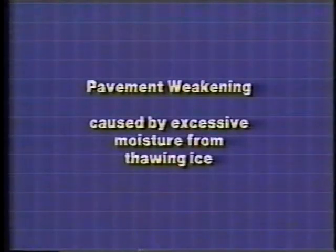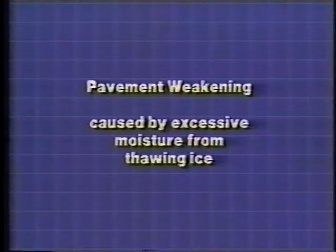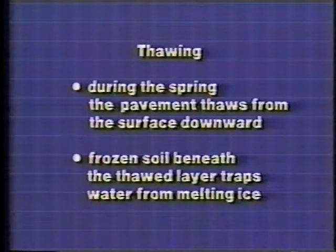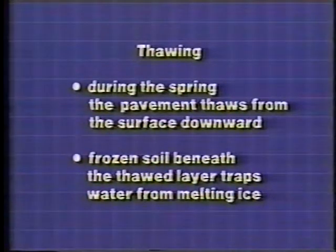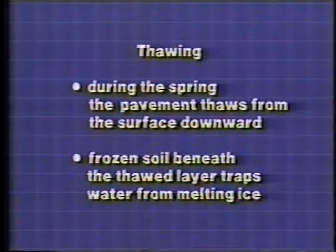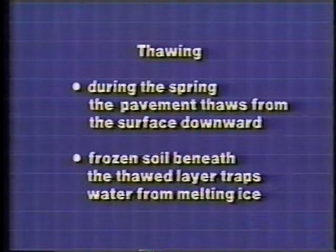A second spring-related pavement problem is weakening of the pavement structure. This can be caused by excessive moisture from thawing ice or water infiltration from the surface when temperatures reach a thawing point. Thawing can proceed from the top down or from the bottom up, depending on the pavement surface temperature. During a sudden spring thaw, melting will occur mostly from the surface downward, leading to poor drainage conditions. The frozen soil beneath the thawed layer can trap water released by the melting ice lenses, so that lateral and surface drainage are the only paths the water can take.